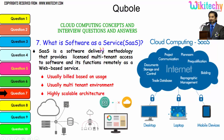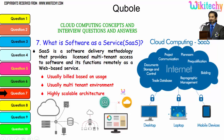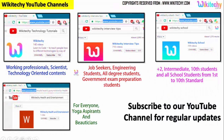Software as a Service is a software delivery methodology that provides licensed multi-tenant access to software and functions remotely as a web-based service. It is usually billed based on usage, operates in a multi-tenant environment, and has a highly scalable architecture. Essentially, you rent software from the cloud and access it via a browser. That is how Software as a Service works.